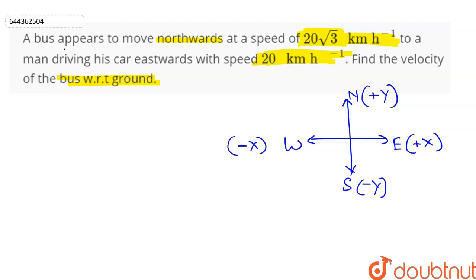We are first of all given the speed of bus with respect to man driving his car, so that's denoted as v vector BC. This is given to us as 20 root 3, and because the direction is northwards, that is positive y direction, we have j cap kilometer per hour.